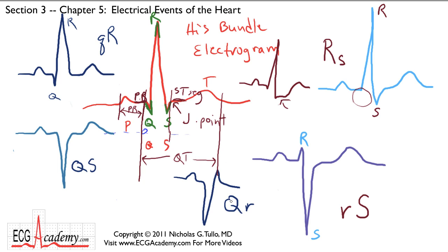That's an overview of the electrical events of the heart, how these events relate to the cardiac conduction system, how we name the squiggles recorded on an electrocardiogram, and the different shapes and configurations we may see when analyzing ECGs. Thanks for watching, and remember to log in to ecgacademy.com for more videos from beginning to end, basic to advanced, to help you become an ECG expert too.